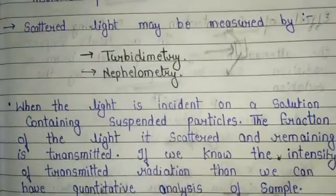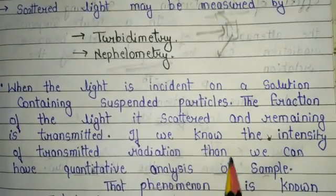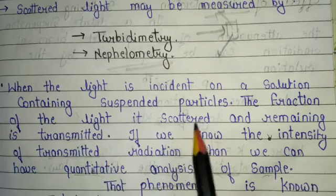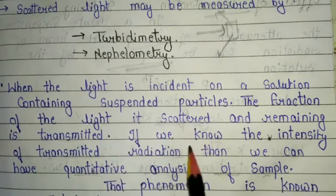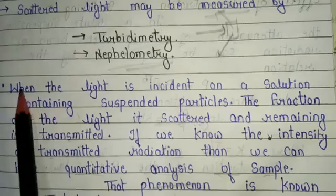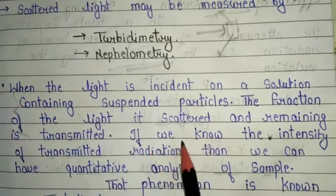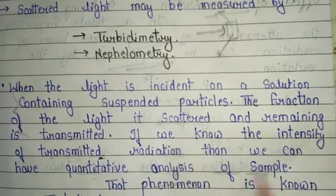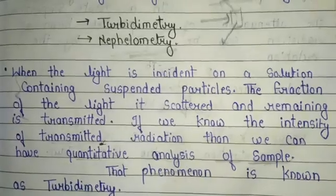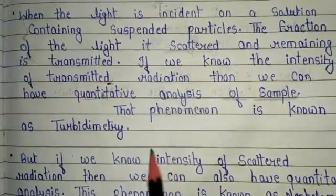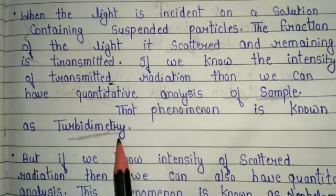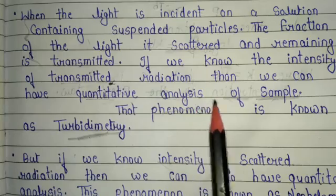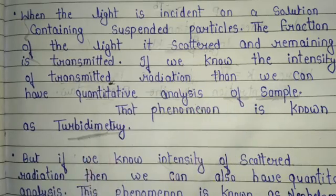When light is incident on a solution containing suspended particles, the fraction of the light is scattered and the remaining is transmitted. If we know the intensity of transmitted radiation, then we can have quantitative analysis of the sample. That phenomenon is known as turbidometry.